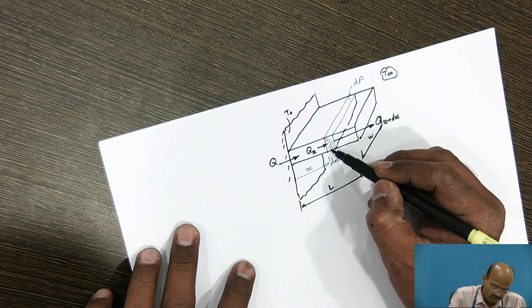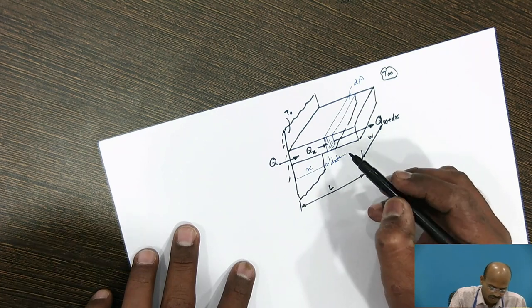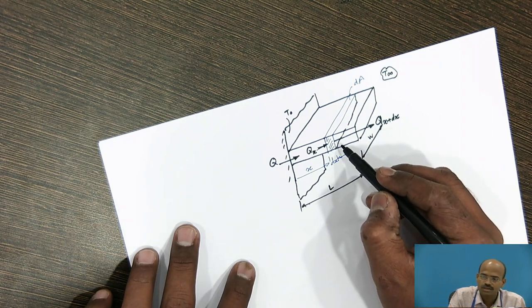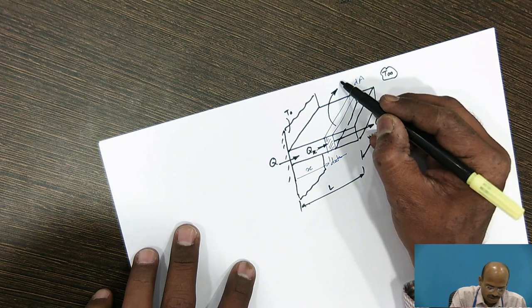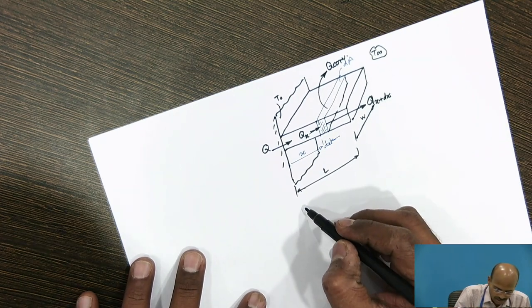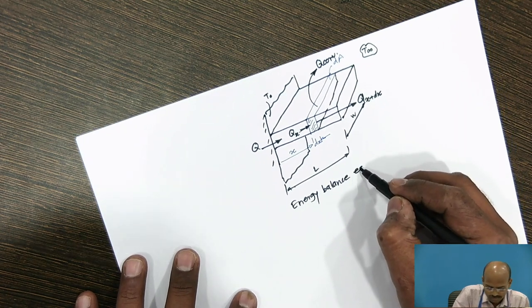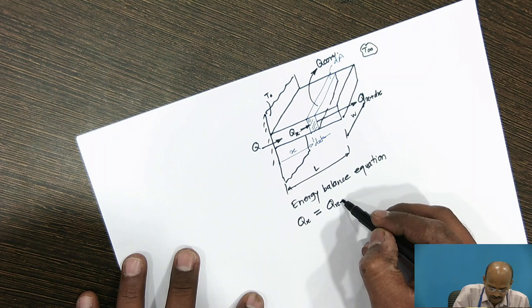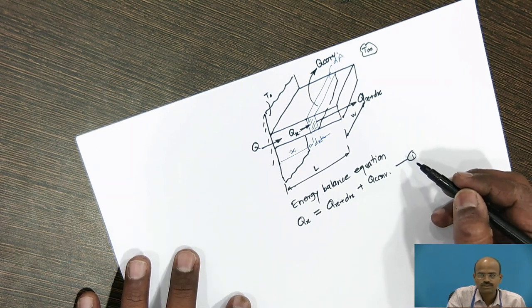To this elemental area, if I want to apply the energy balance equation, then qx will be equal to qx+dx. This is the conductive heat transfer. And from this elemental area to the fluid, the heat loss would be by means of convection. I can write the energy balance equation as qx = qx+dx + qconvection. This is equation 1.